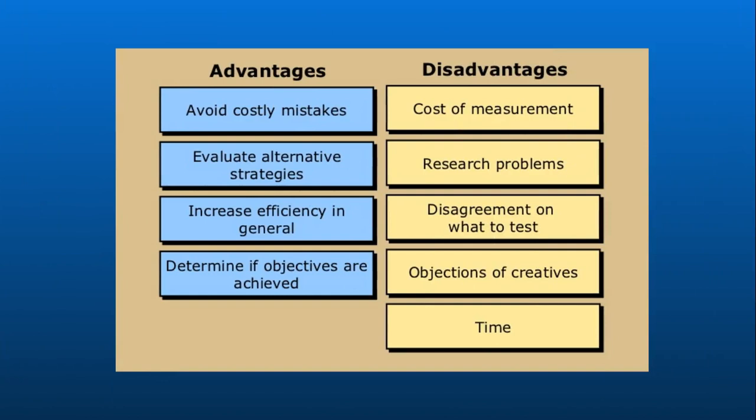Here are some pros and cons on why to measure your advertising effectiveness. It can avoid a lot of costly mistakes, and you can evaluate alternative strategies in your plan. It can increase efficiency overall, and it determines if the objectives were achieved. Some disadvantages include the cost of measurement, research problems such as bias, disagreement on what to test and the objectives of creatives, and a time disadvantage as well.